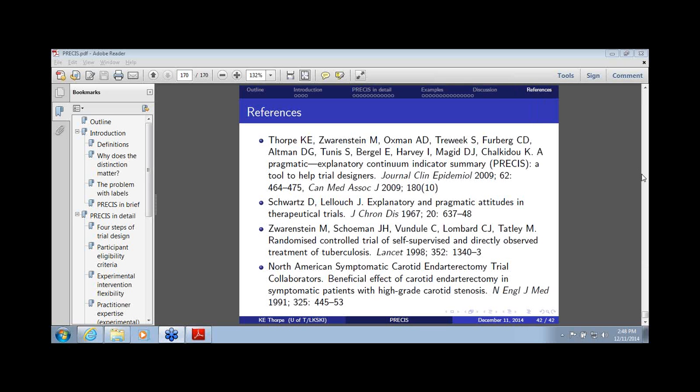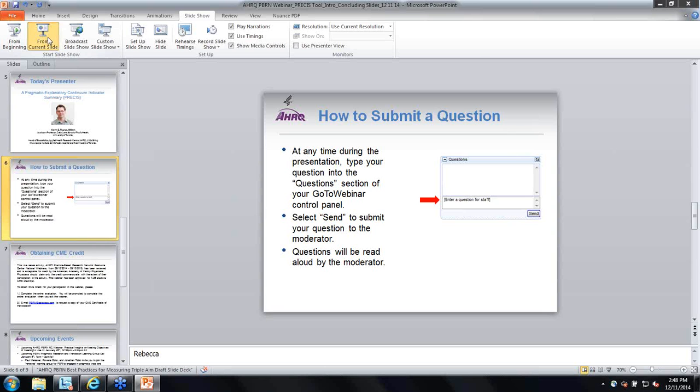Okay. And Christina will go over the description of what one needs to do if one wants to file for continuing education credits for this presentation. Thank you. So thank you all for attending today's PBRN webinar. This live series activity, the AHRQ Practice-Based Research Network Resource Center National Webinars, has been reviewed and is acceptable for credit by the American Academy of Family Physicians. This webinar has been approved for 1.25 elective CME credits. To obtain CME credit for your participation in this webinar, I just jumped ahead. Please complete the online evaluation, and you'll be prompted to do so when you exit the webinar. Then please email us at pbrn at abtassoc.com to request a copy of your CME certificate of participation.